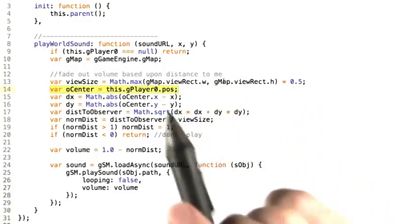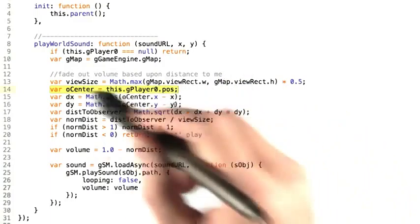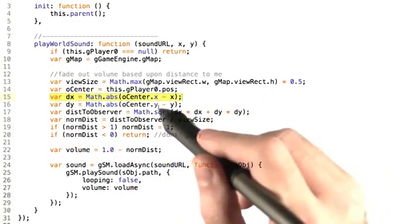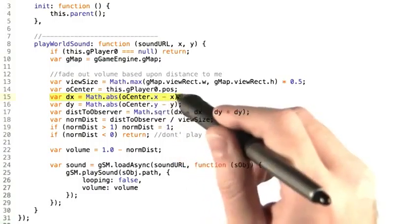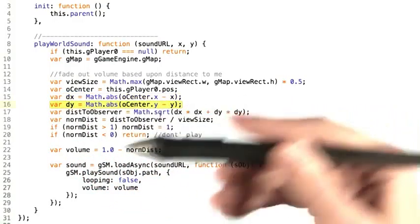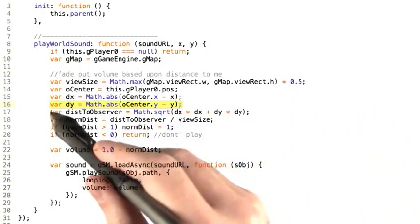And we want the distance from the player to the sound. Now we're going to take the x value, the absolute x value, from the player's position to the sound's x position, and similarly for the y value. And now we simply compute the distance function,